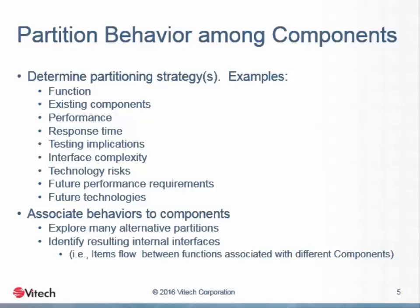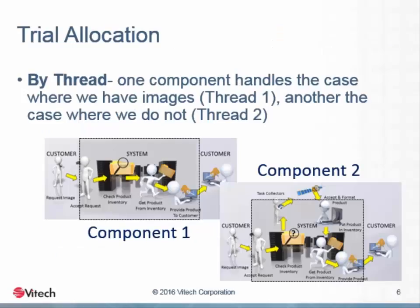There are a number of approaches we can take to allocating behavior to the physical architecture. One possibility in our example is to allocate the handling of images already in the library through one structure, while handling images that need to be ordered, captured, and then distributed using another structure. A problem with this allocation strategy leaps out at us as soon as we begin to visualize it: there are a number of functions that would be duplicated between the two component structures. For example, both would need to take requests from customers, and once the image is obtained — either from storage or from the collectors — it would need distribution to the customer.